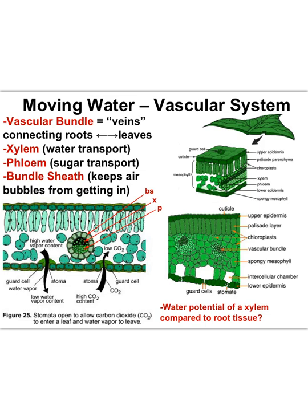Once the water gets into the plant, the water's journey isn't over. Plants need to get the water to the leaves where photosynthesis reactions take place. So plants have a specialized transport system called the vascular system — the veins of the plants — that works a lot like the vascular system in our bodies, made up of arteries and veins.